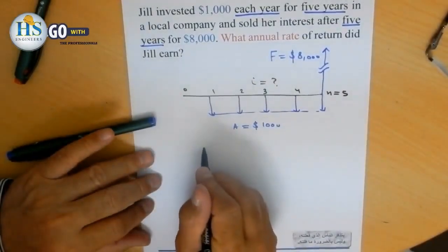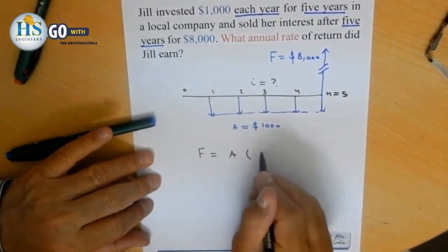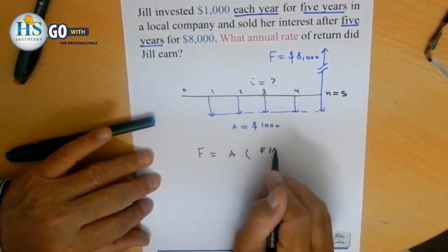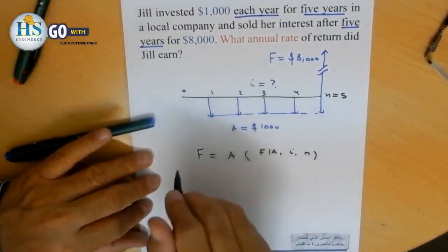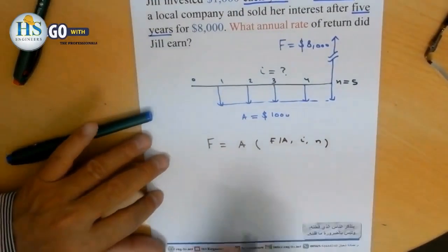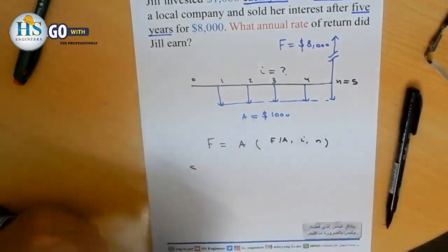I'll say F equals A times F given A, or the reverse. We could say A equals F times A given F. Either one works, both are fine.